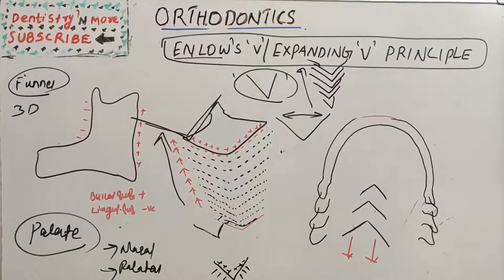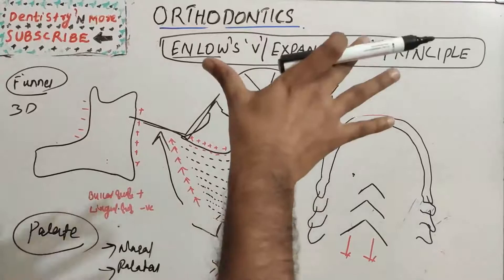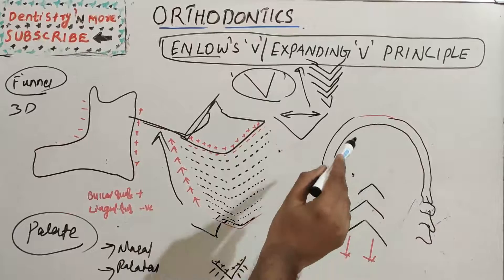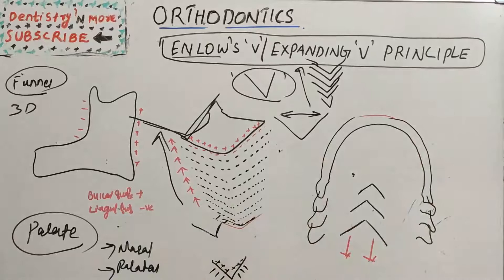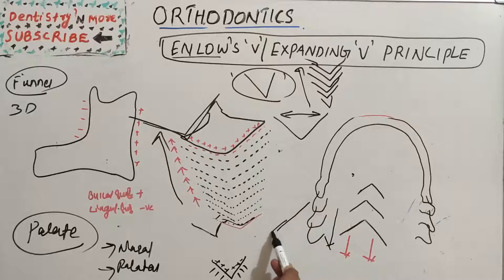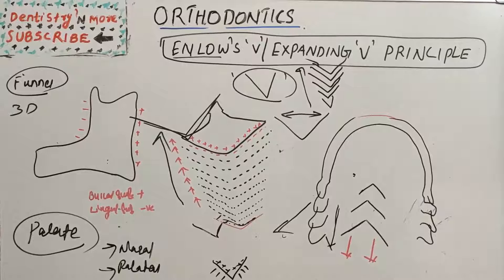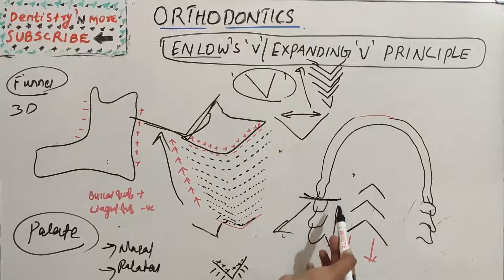Next is the ramus. The growth of the mandible also follows the V principle. When viewed from above, the condyle and the ramus expand in a posterior and lateral direction due to growth of the body and ramus. It expands backward and also laterally because of the growth of the body, ramus, and condyle itself.